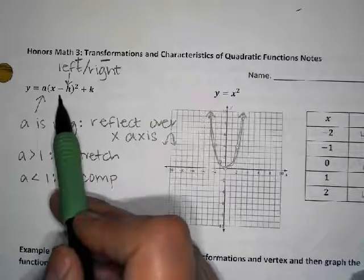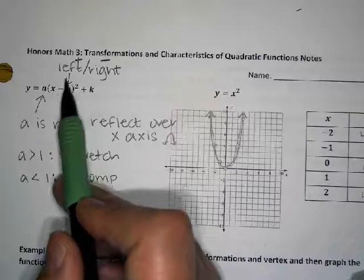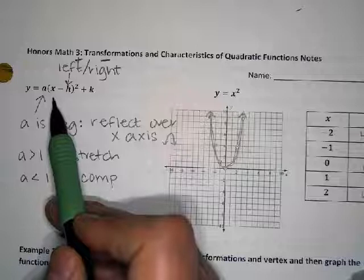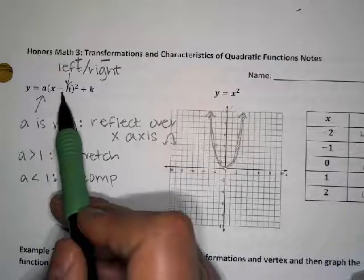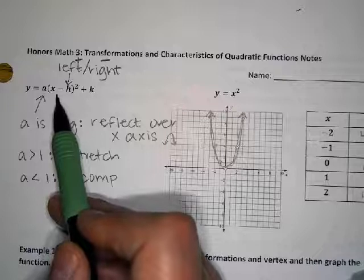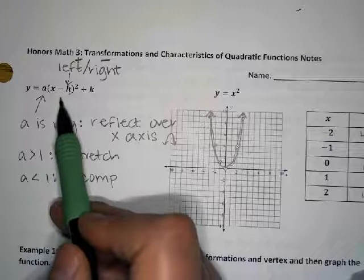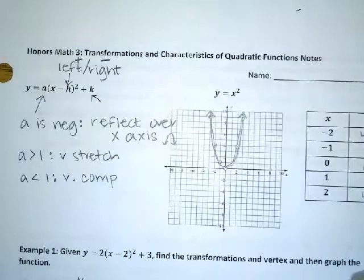If you had a plus 2 inside, you would minus it to get out of the parentheses — so it moves left. If you had a minus 5, you would plus 5 to get out of the parentheses — so it moves right. You're doing the opposite. The number on the end is already outside the parentheses, so it's exactly what you'd expect.